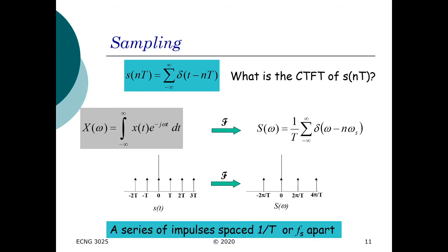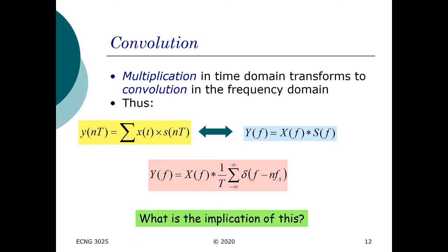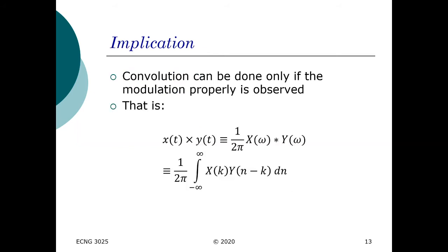The frequency domain representation is a series of impulses placed 1/T, or f_s (the sampling frequency), apart. The convolution property also holds true such that multiplication in the time domain means convolution in the frequency domain and vice versa. The implication of this is that convolution between two signals in discretized time can only be done if this modulation property is observed, given by the corresponding equation. If this property is not observed, convolution cannot be done in discretized time.